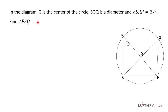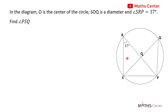In the diagram, O is the center of the circle. SOQ is a diameter and angle SRP is equal to 37 degrees. Find angle PSQ.